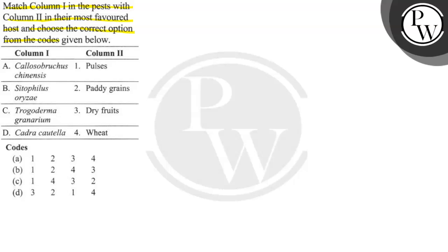We have here column 1 and column 2. Column 1 is pests and column 2 is favored host.